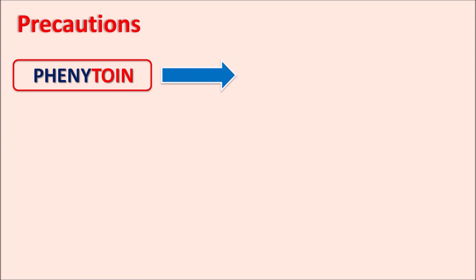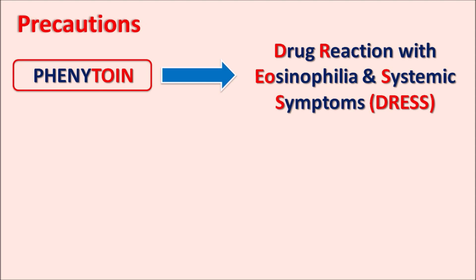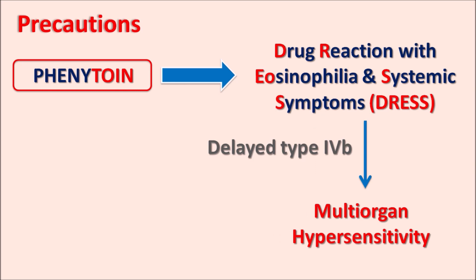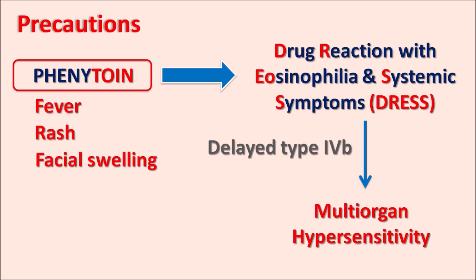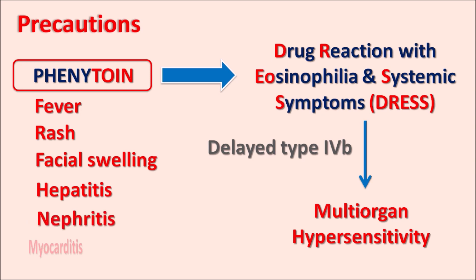An important precaution is that phenytoin can induce DRESS — Drug Reaction with Eosinophilia and Systemic Symptoms — a collection of symptoms from a delayed type IVB hypersensitivity reaction causing multi-organ hypersensitivity. Symptoms include fever, rashes, facial swelling, and severe conditions like hepatitis affecting the liver, nephritis affecting the renal system, myocarditis affecting the heart, and myositis. Whenever hypersensitive reactions such as skin rash or fever develop after using phenytoin, the drug should be immediately stopped.